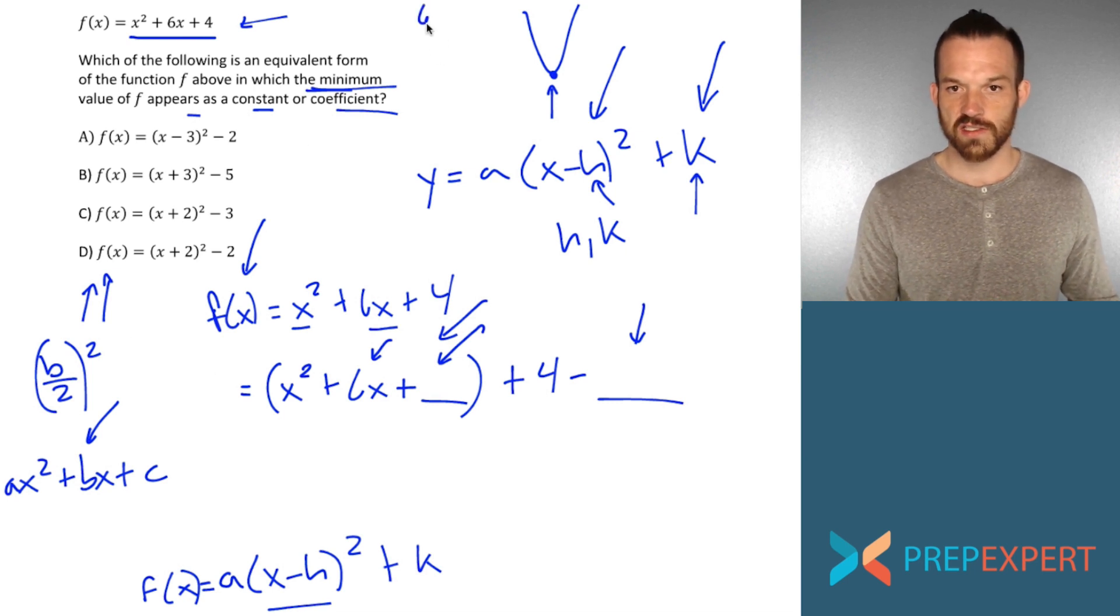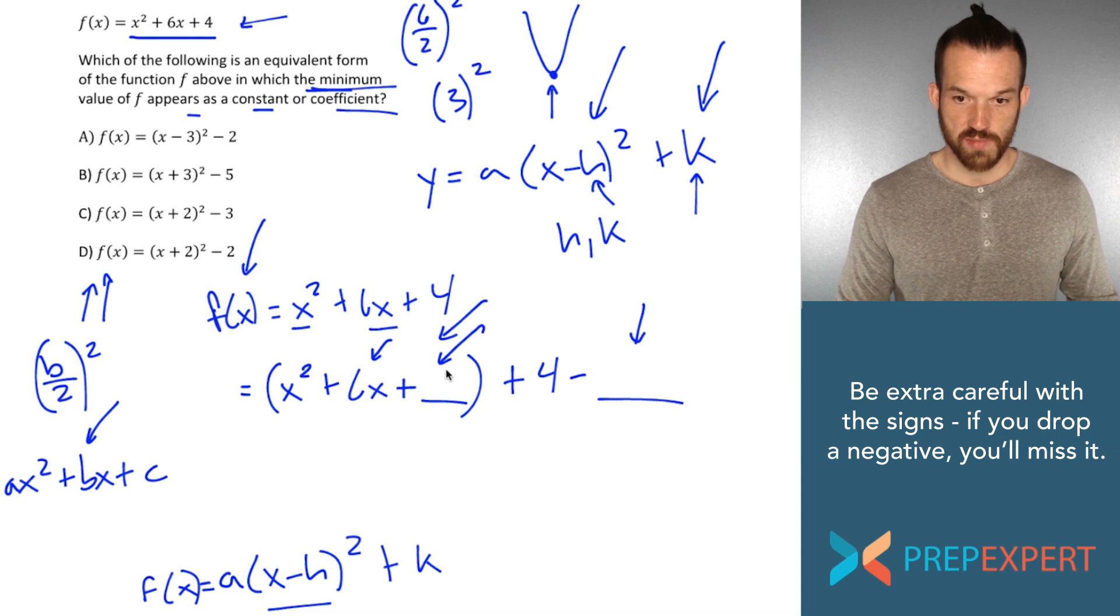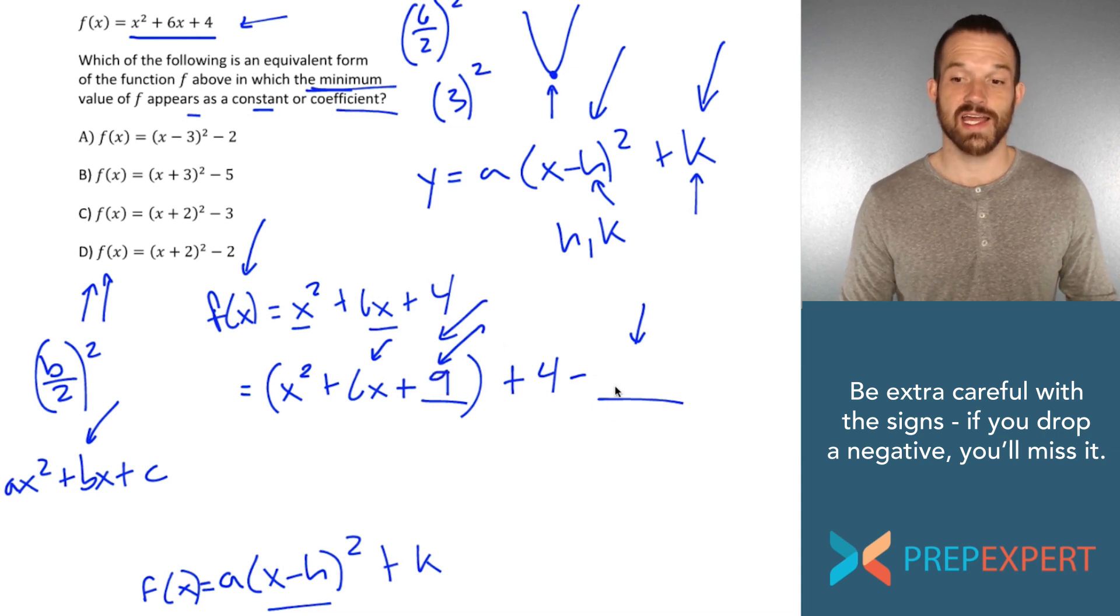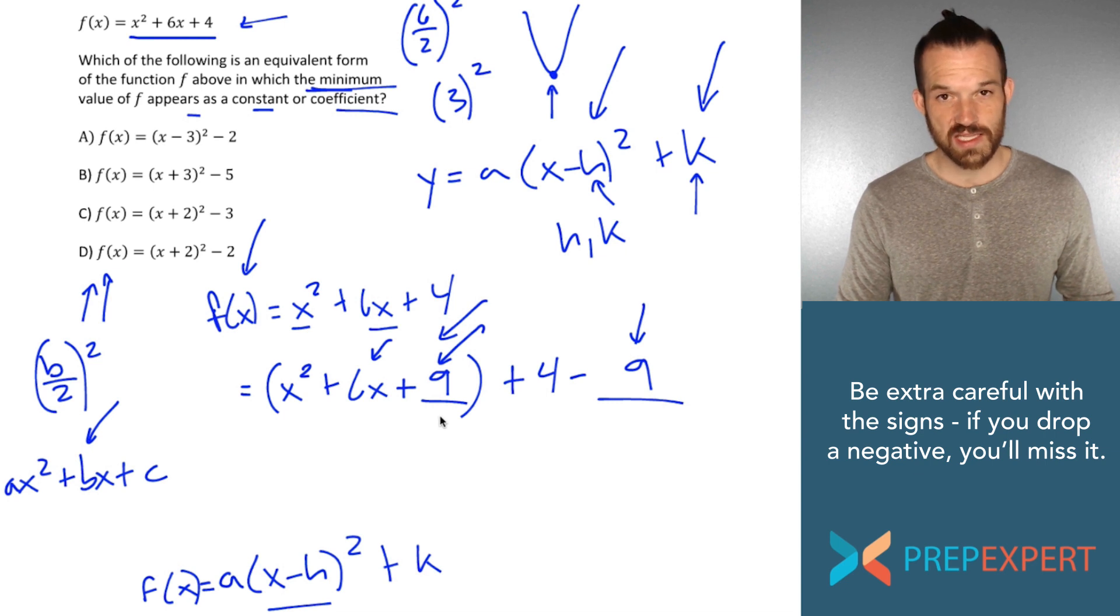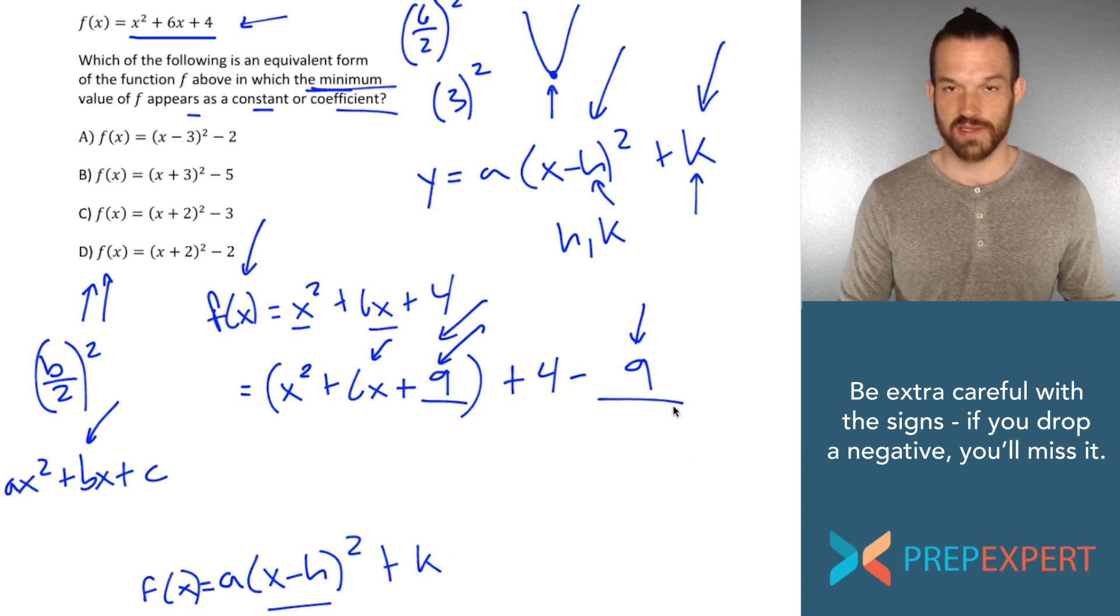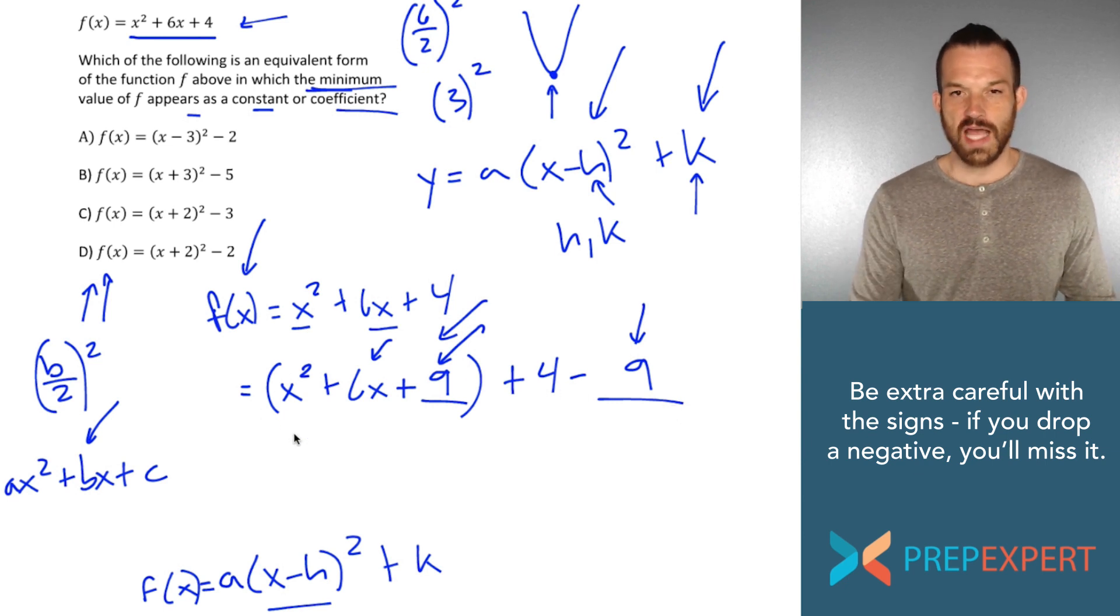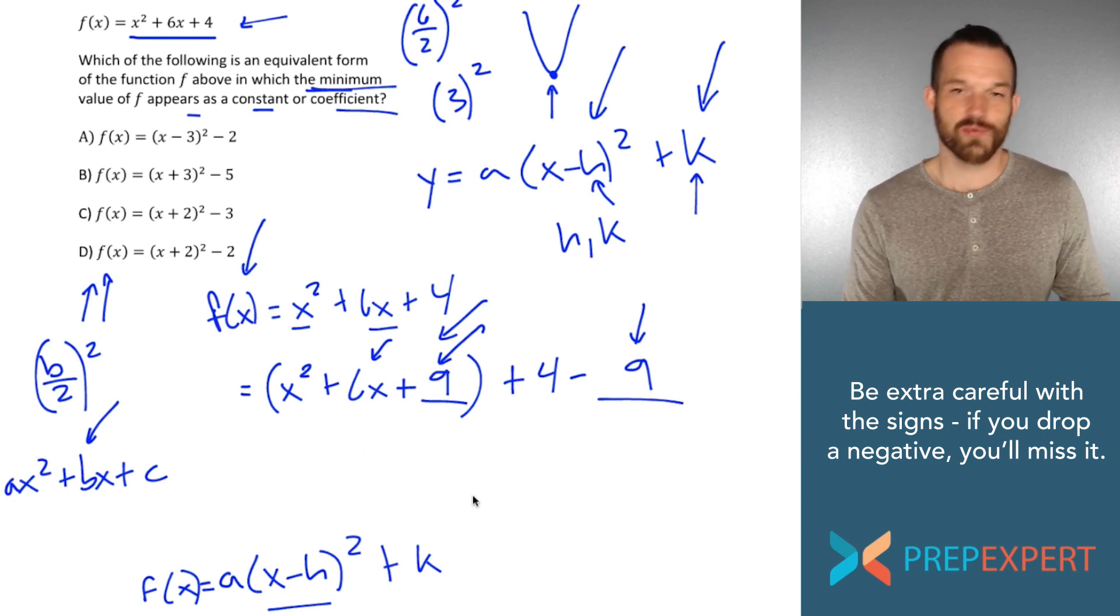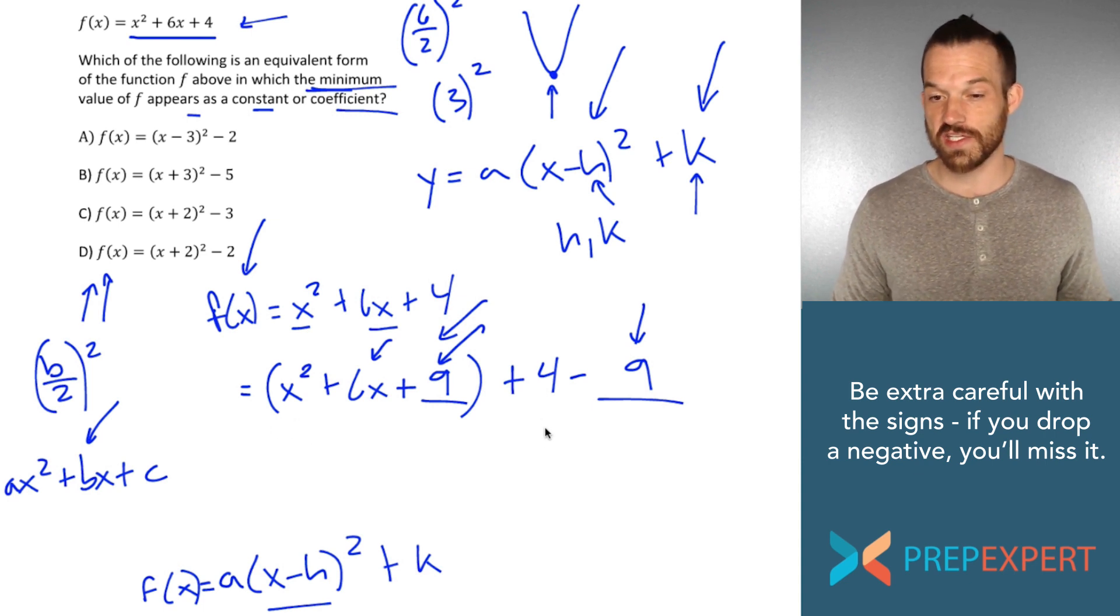So how do I find what goes in the blank? I take that six, divide it by two, and I quantity square the result. So what is six divided by two? It's three. And three squared is what goes in my blank. So what goes in my blank? Nine. And I'm going to put nine in the blank outside. As soon as I fill in the blank inside the parentheses, I want to fill in the blank outside the parentheses as well. Make sure I don't make a mistake. So I figured out what goes in the blank, both inside the parentheses and outside the parentheses. All that remains to be done is to factor inside the parentheses and simplify outside the parentheses.